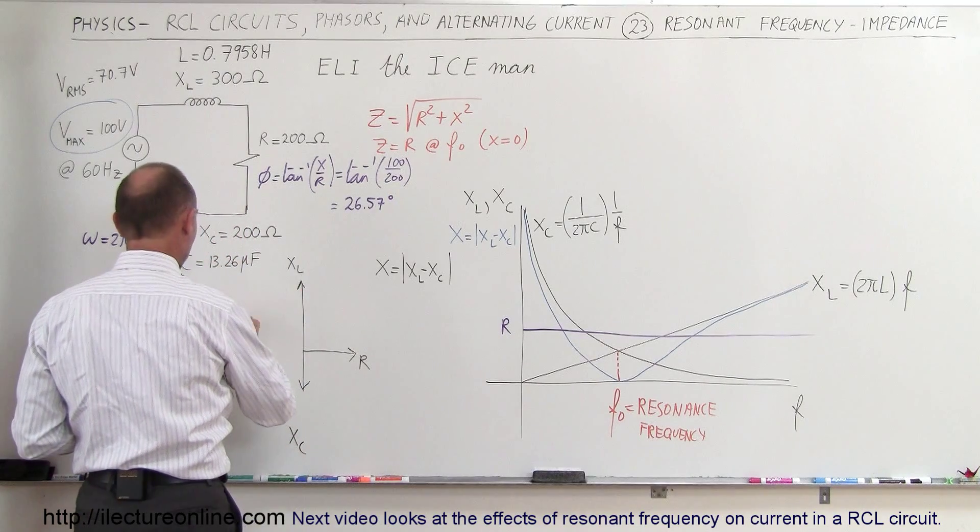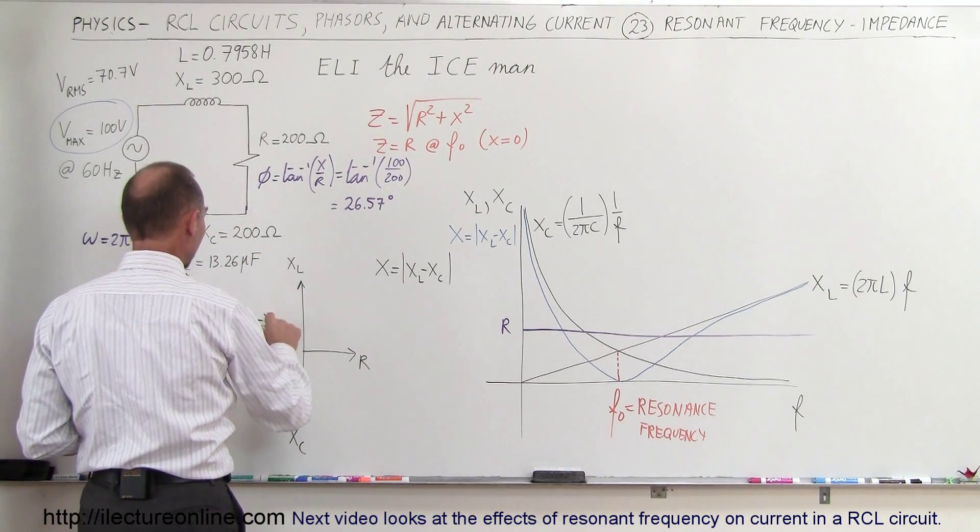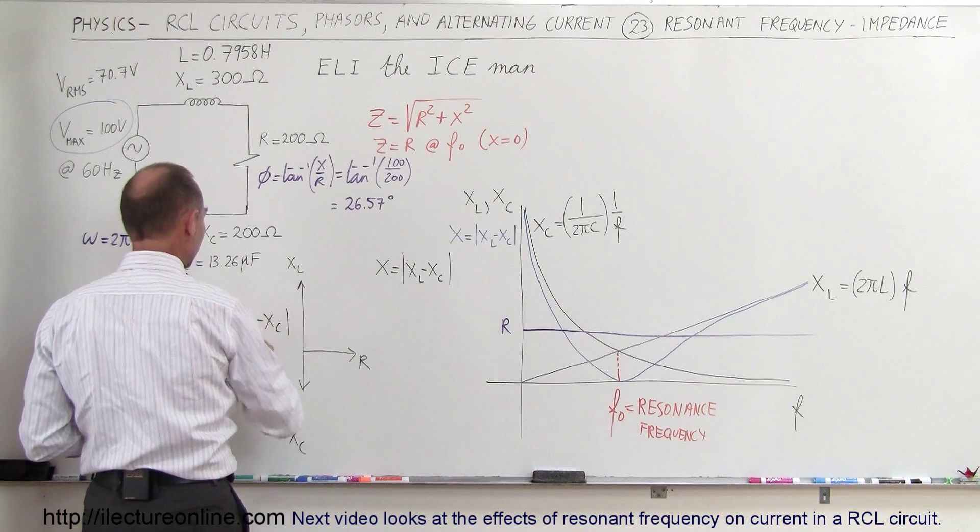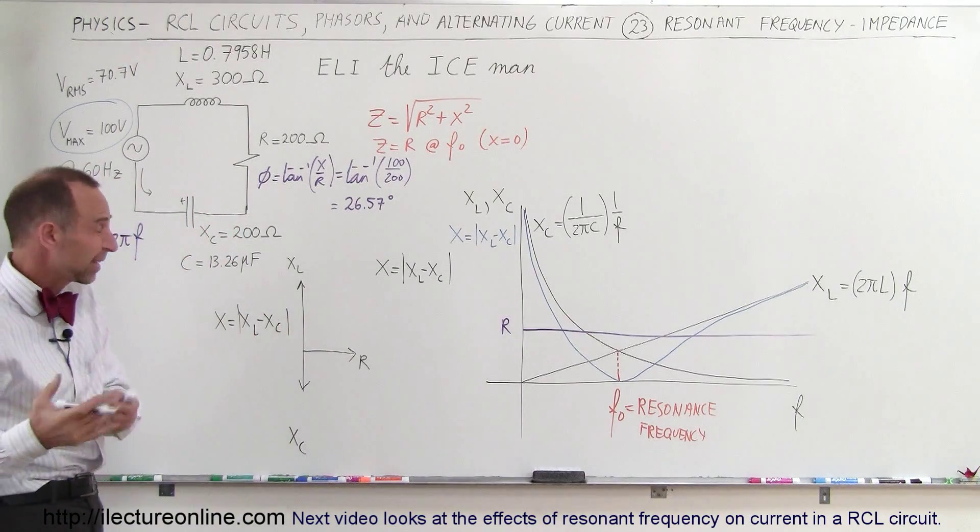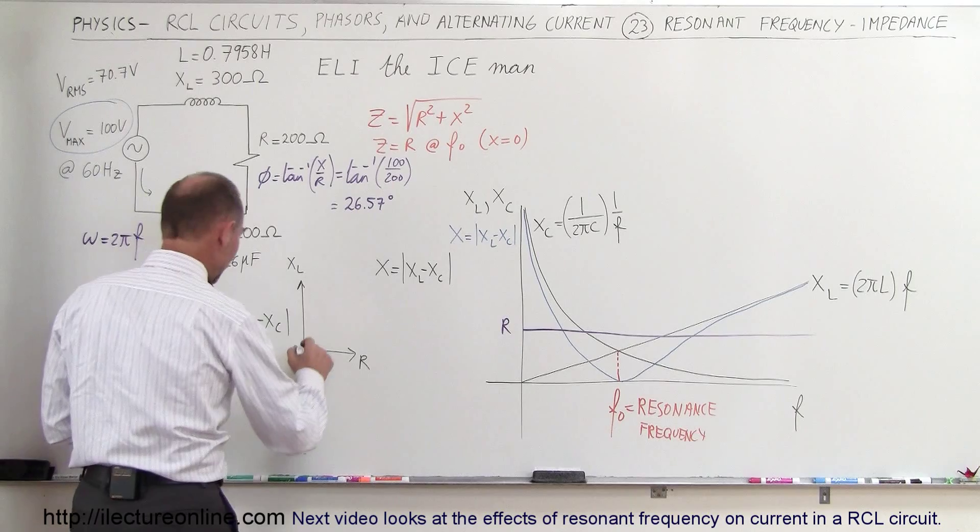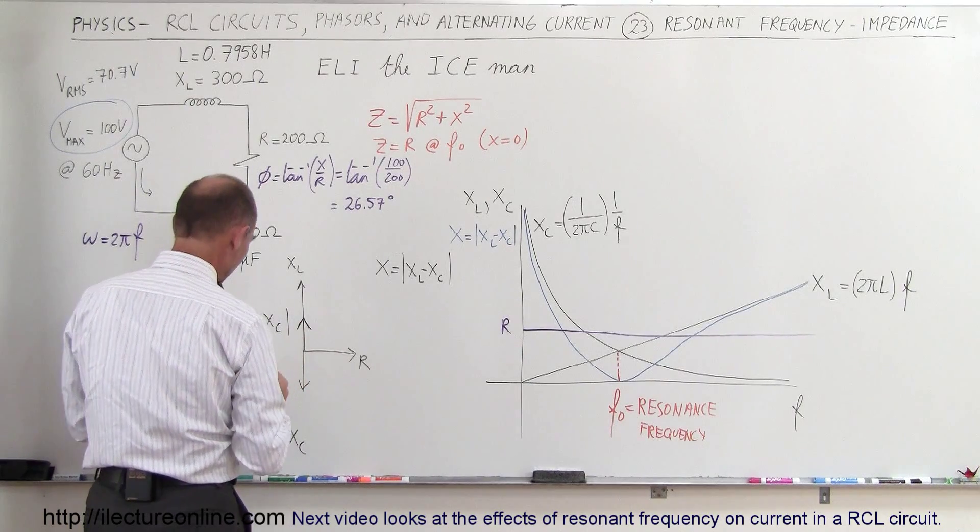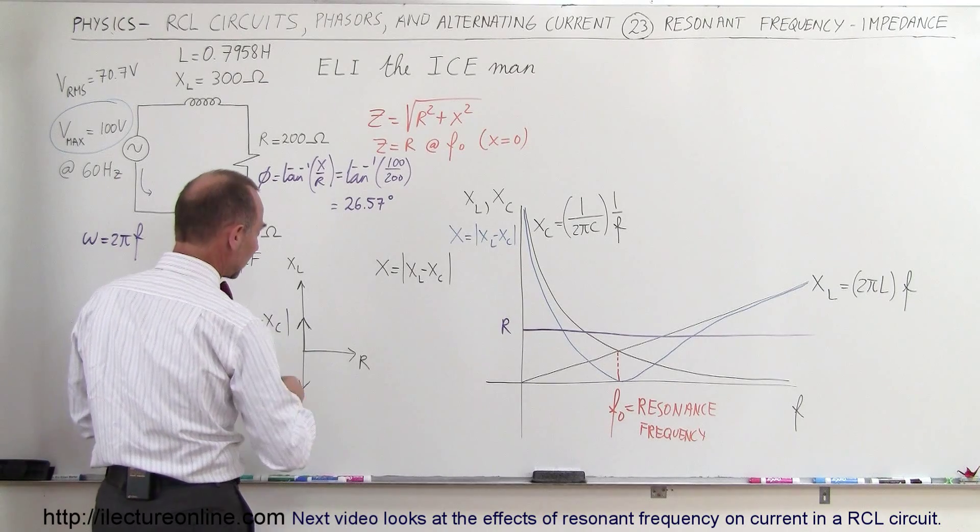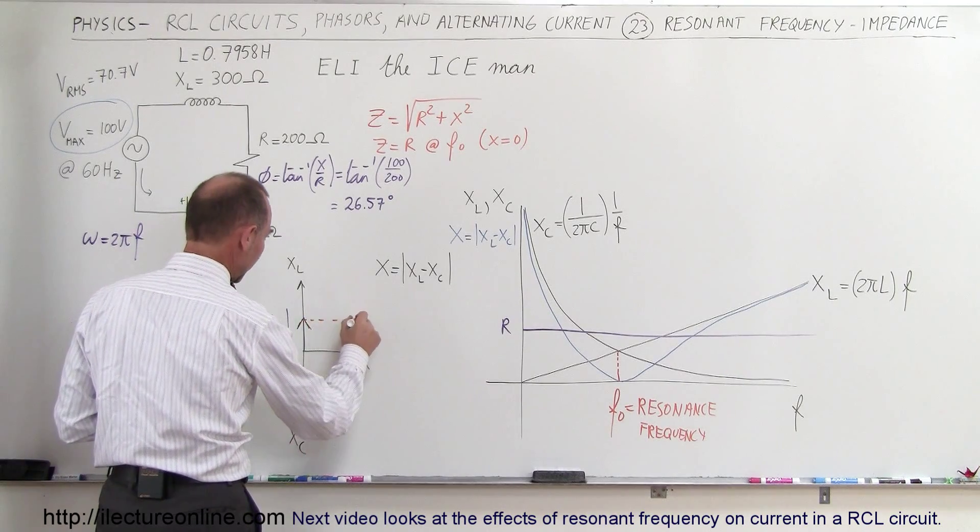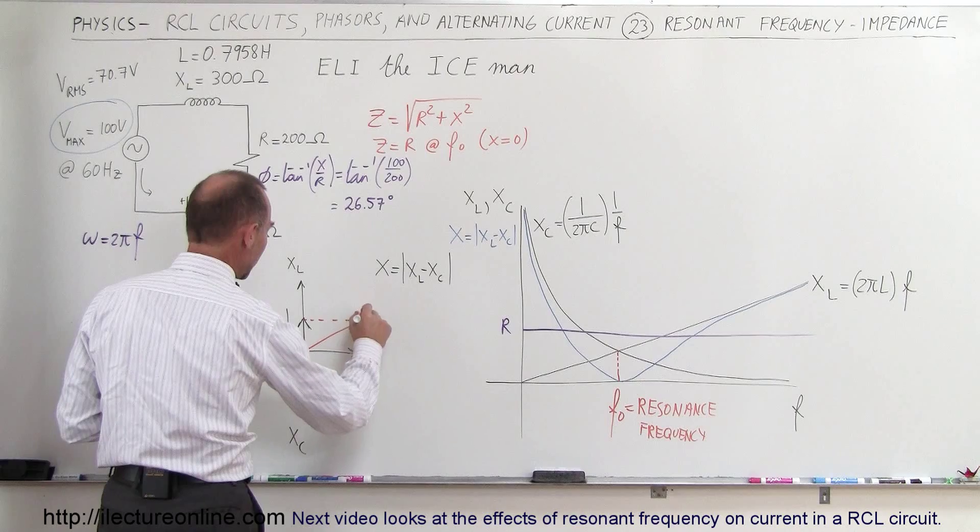So when we have x that's equal to x sub l minus x sub c, yes it is the absolute value but in this case since x sub l is bigger than x sub c it doesn't matter, and so that means that this here would be r reactance. So this here would be x and then if we add the two together we get the vector sum and that would then be the impedance z.